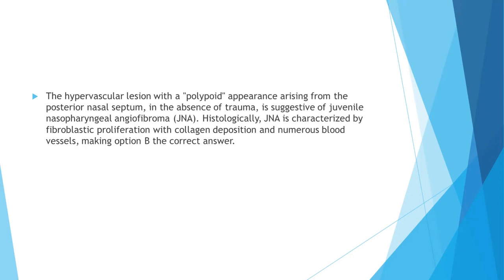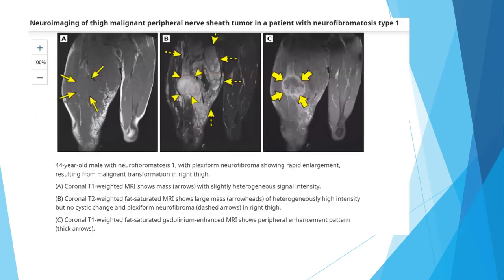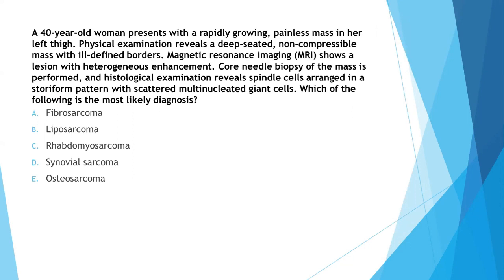Next question: Which of the following is the most likely diagnosis? A 40-year-old woman presents with a rapidly growing, painless mass in her left thigh. Physical examination reveals a deep-seated, non-compressible mass with ill-defined borders. MRI shows a lesion with heterogeneous enhancement. Core biopsy reveals spindle cells arranged in a storiform pattern with scattered multinucleated giant cells. Options: fibrosarcoma, liposarcoma, rhabdomyosarcoma, synovial sarcoma, or osteosarcoma.